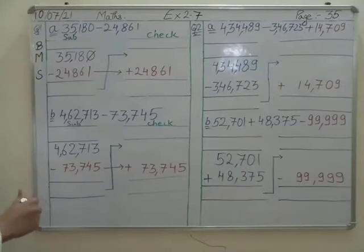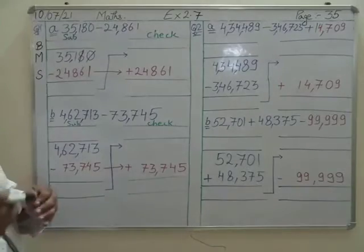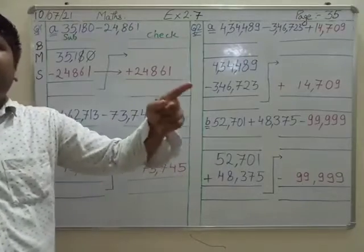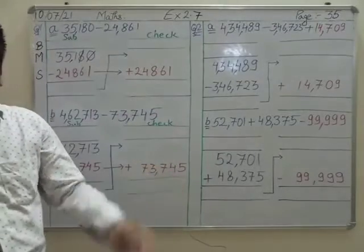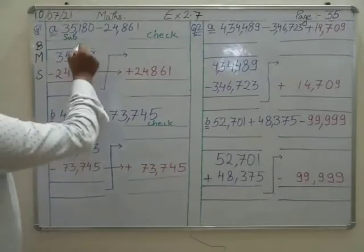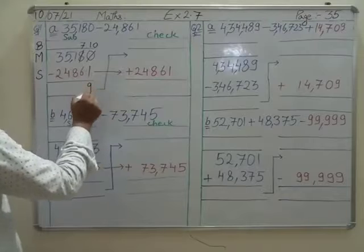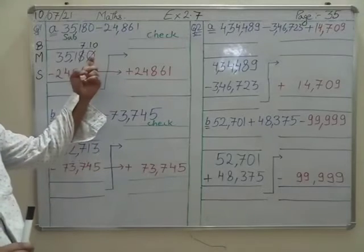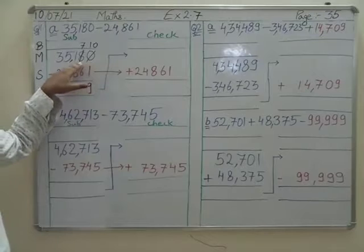We can't subtract 1 from 0, so we will take a borrow from 8. We will politely ask 8 for a borrow. Let's do it one step at a time.